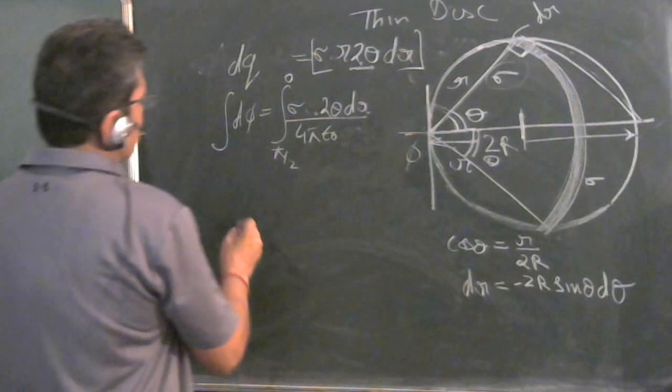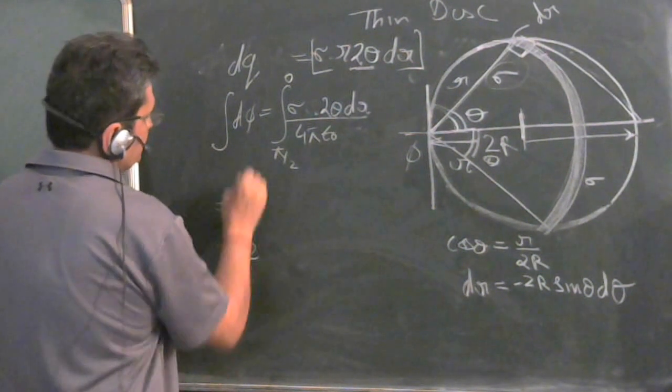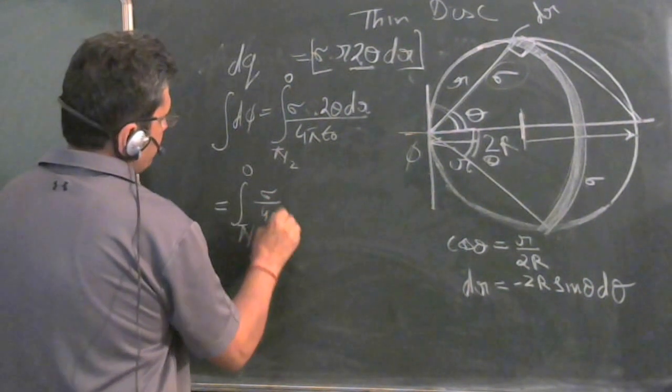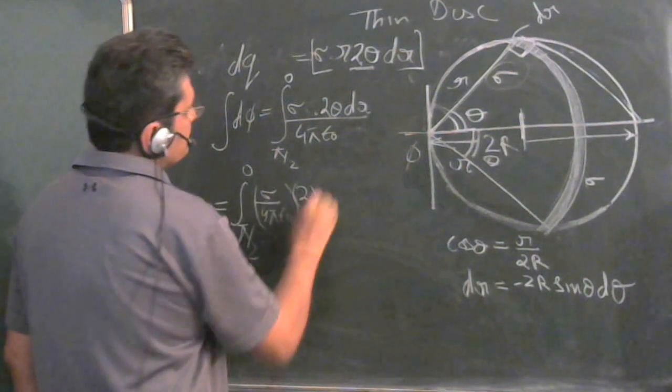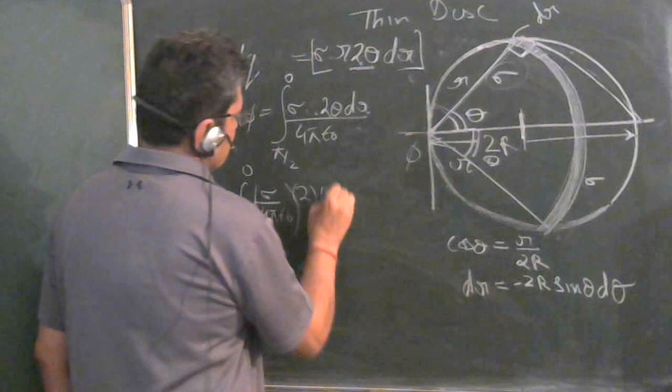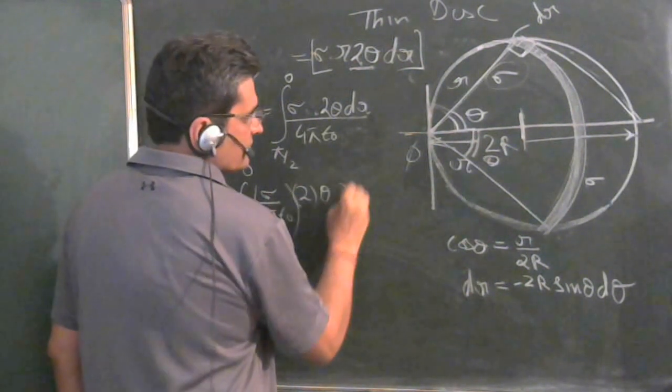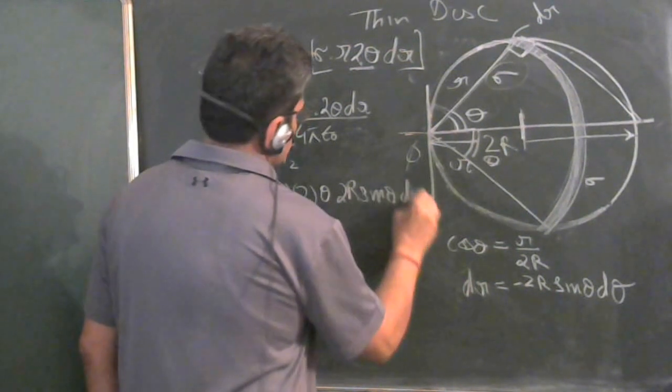Put the value of dr here and you get pi by 2 to 0. Sigma upon 4 pi epsilon_0. Twice theta. What is dr? Minus twice r sin theta d theta.